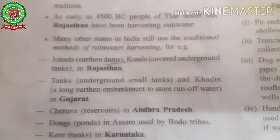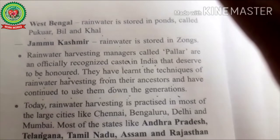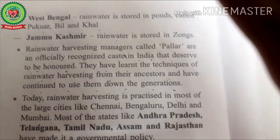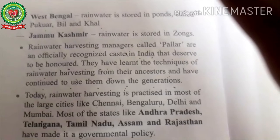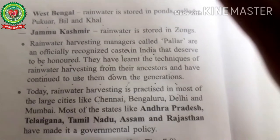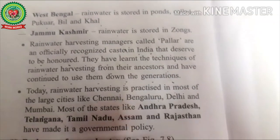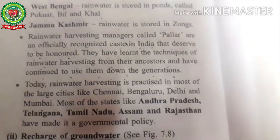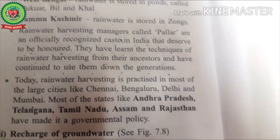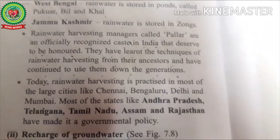Bahandras are check dams or diversions built across rivers in Maharashtra. In Bengal, rainwater is stored in ponds called Pukwa, Bil, and Khal. In Jammu and Kashmir, rainwater is stored in Zon. Rainwater harvesting managers called Mpallar are an officially recognized caste in India who have learned techniques from their ancestors and passed them down through generations. Today rainwater harvesting is practiced in large cities like Chennai, Bengaluru, Delhi, and Mumbai, and most states including Andhra Pradesh, Telangana, Tamil Nadu, Assam, and Rajasthan have made it a government policy.